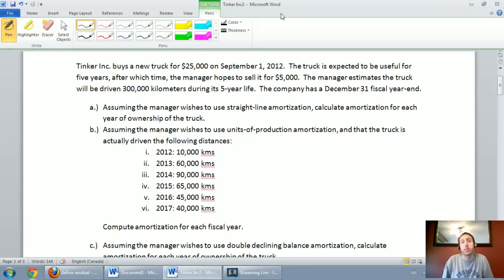In this video series, we've been talking about amortization. In the first video, we learned how to do straight line amortization, where amortization is the same every full year. In the second video, we learned units of production amortization, where amortization fluctuates with the amount we use our asset.